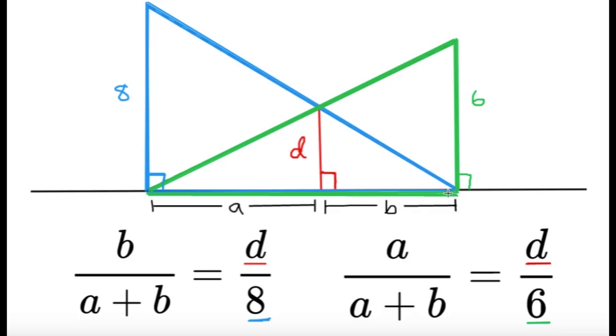This triangle over here, as you can see by my highlight, is similar to this blue triangle, and we can compare the corresponding sides. So I'm going to compare b and d. b is to d, it's the same as a plus b to 8. So I'm just getting corresponding sides. b is to d, and a plus b is to 8. I'll be able to get this ratio from using this blue triangle and using this right triangle being similar to the blue triangle.